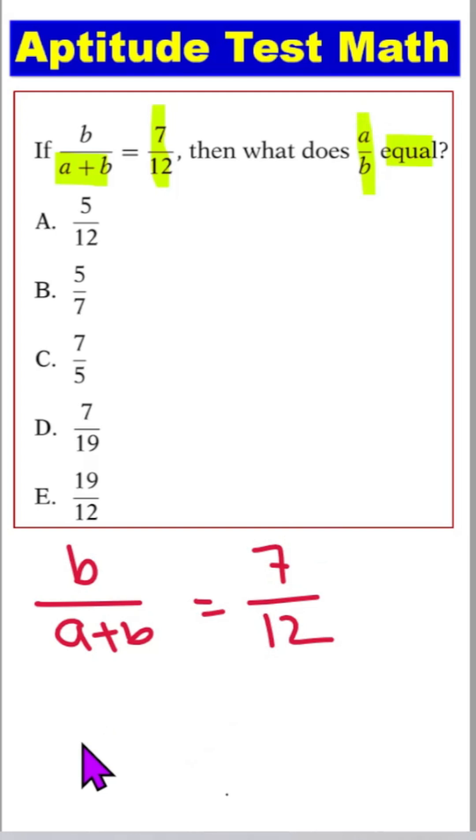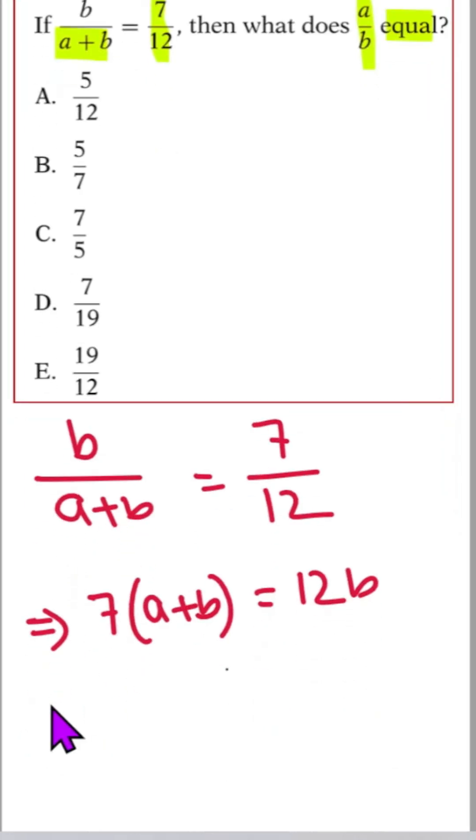We need A by B. So first we can write 7 times A plus B equals 12 B. This suggests cross multiplication.